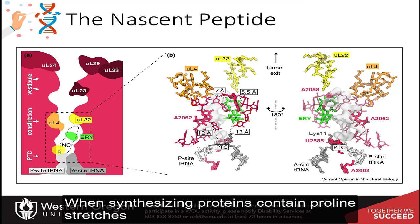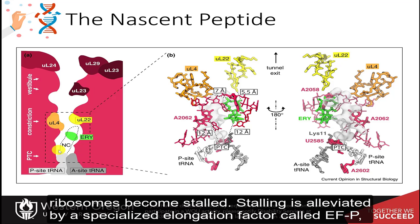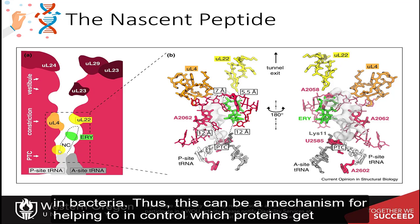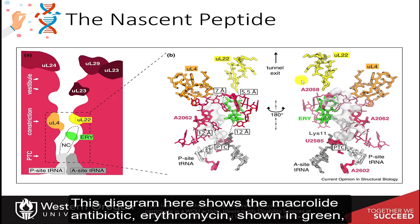When synthesizing proteins contain proline stretches, such as several prolines in a row, ribosomes become stalled. Stalling is alleviated by a specialized elongation factor called EFP in bacteria. Thus, this can be a mechanism for helping to control which proteins get translated and how quickly.